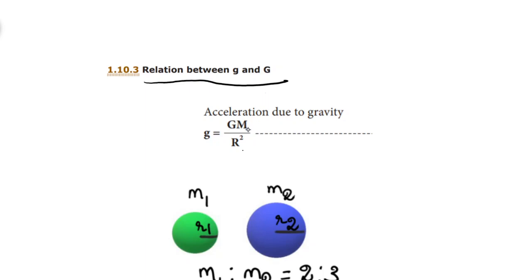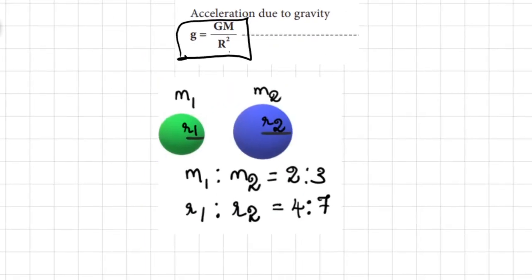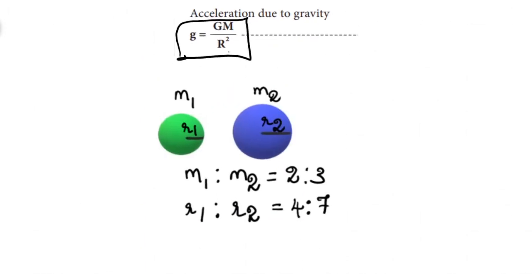Acceleration due to gravity, g is equal to G into M divided by R square. G is the universal gravitation constant — it is a constant value for any planet. M is the mass of the planet. R is the radius of the planet. Now we know the formula, so based on given values, we apply the formula.